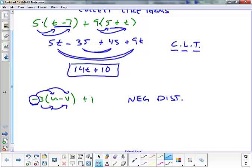So let's go ahead and distribute a negative 3. A negative 3 times u is just negative 3u. A negative 3 times a negative v will be a positive because of the negative times negative 3v. And this is key.